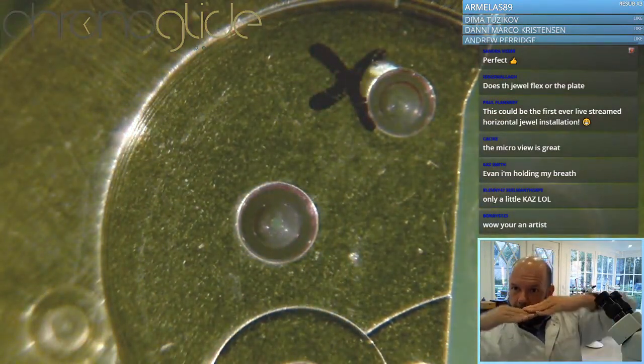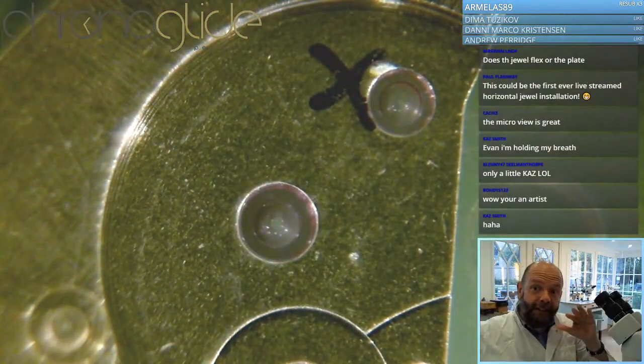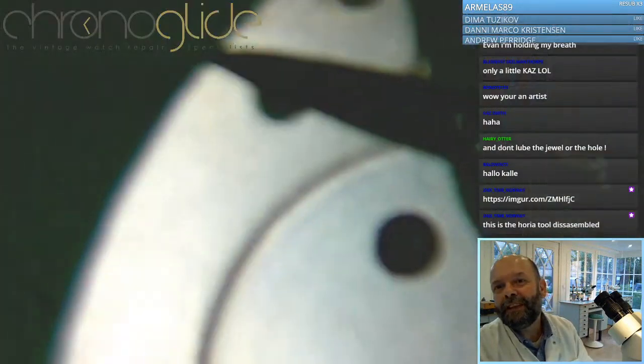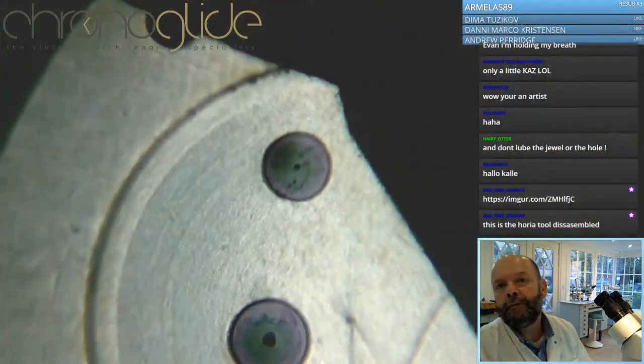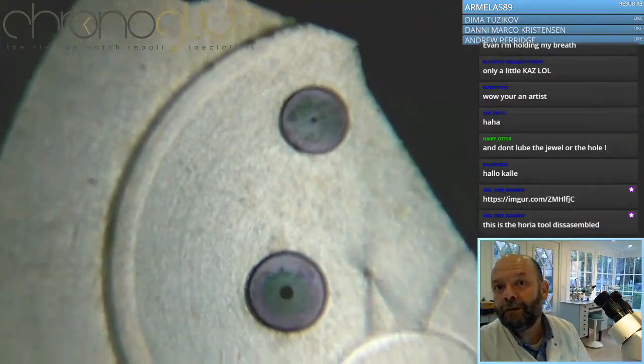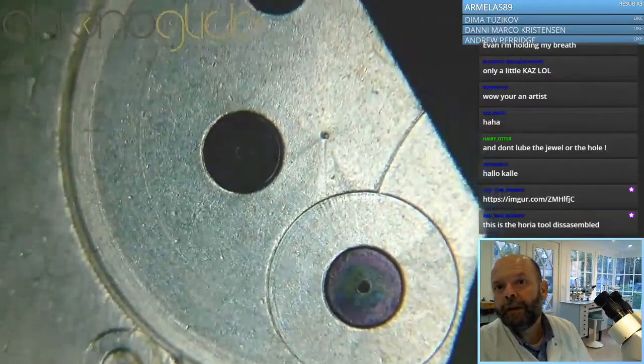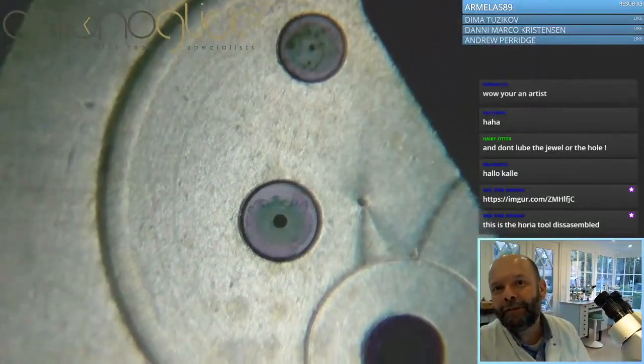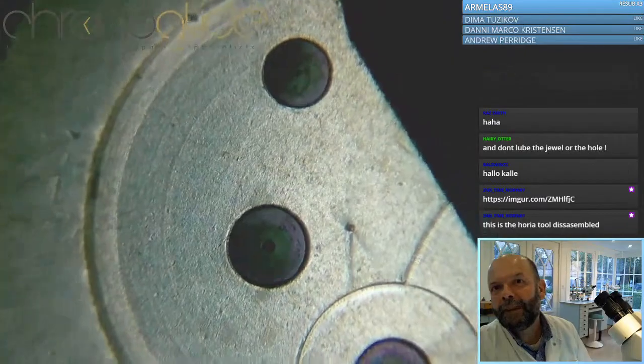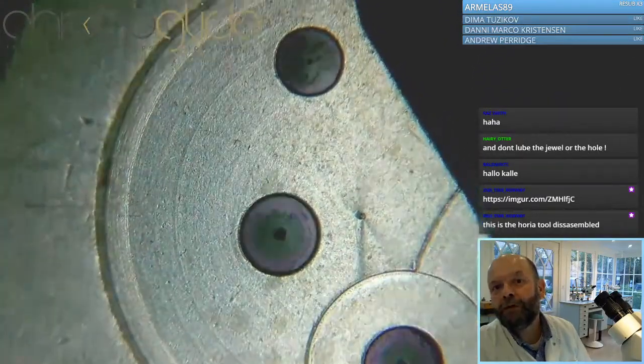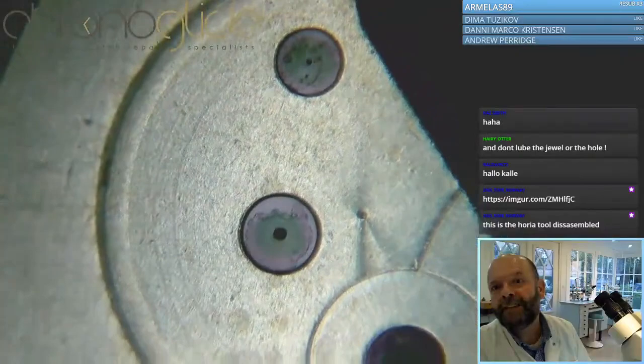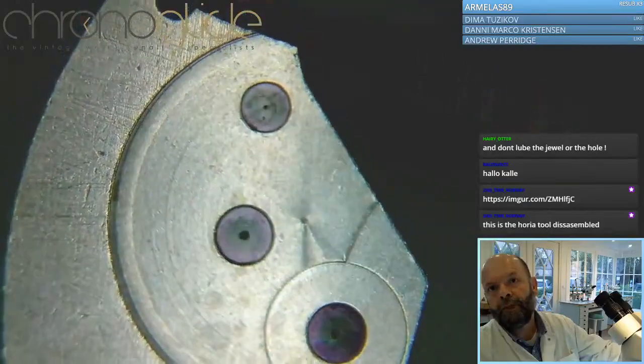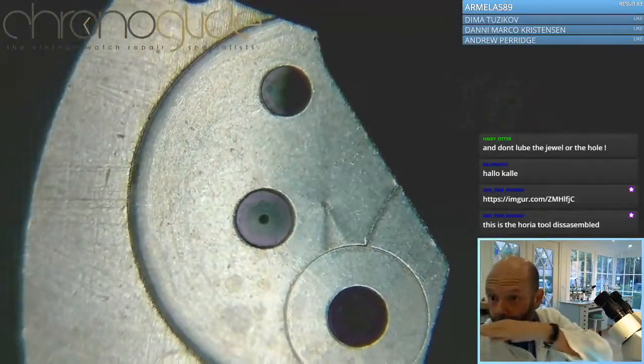Now we have to check the mirroring, if the reflection is at the same time. With a simple rinse, that felt tip marker is gone. It's not clean enough, but if I play with the lights, you see that all jewels reflect the light at the same time. See that? So they're all in one plane.